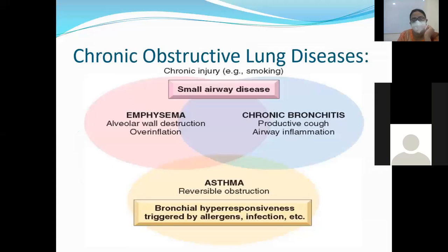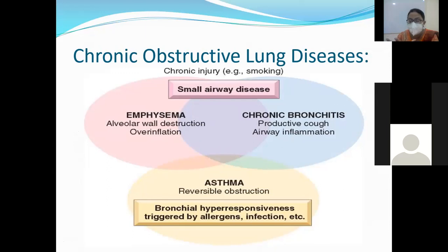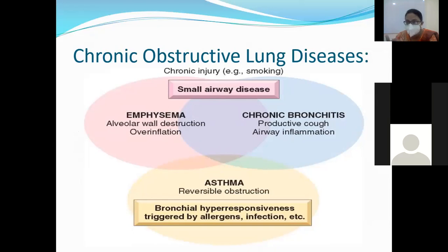This image from Robbins shows that any chronic injury — like smoking — causes damage to the airway. In emphysema, there is a basic defect in the alveolar wall: destruction of the alveolar wall, which is responsible for overinflation of the lung. In chronic bronchitis, it is associated with a productive cough and there is a major role of inflammation. Asthma is basically a reversible condition.